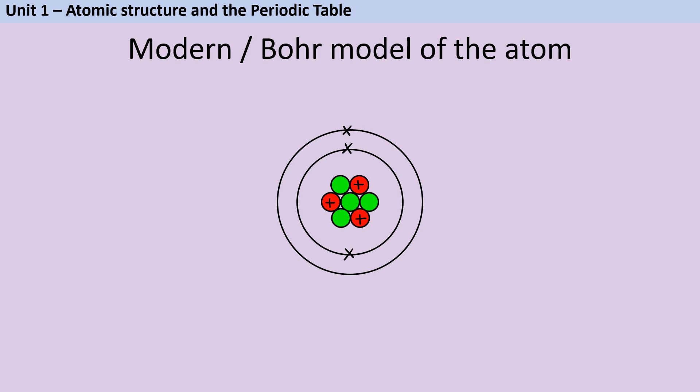You're probably already familiar with this model of the atom which we often refer to as the modern model of the atom or the Bohr model of the atom. It's made up of three subatomic particles called protons, neutrons and electrons.